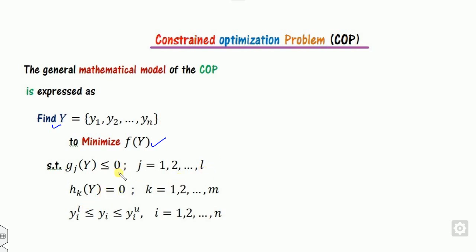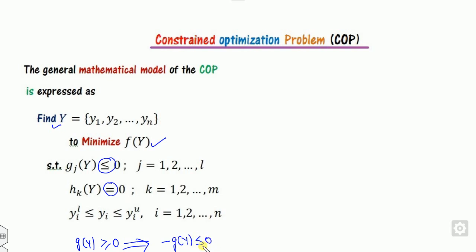Looking closely at the constraints, some may be less than, some may be equality, and some may be greater than. If a constraint g(y) is greater than or equal to 0, you can convert it to less than by multiplying by negative one. That's why I am not writing any greater-than constraints here.